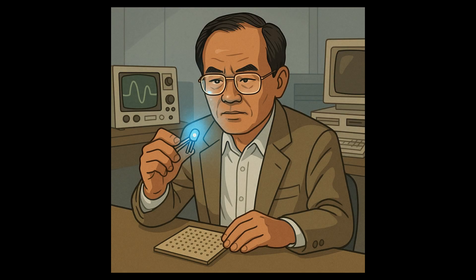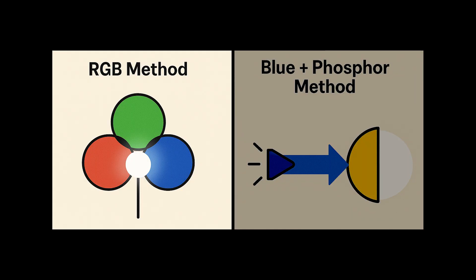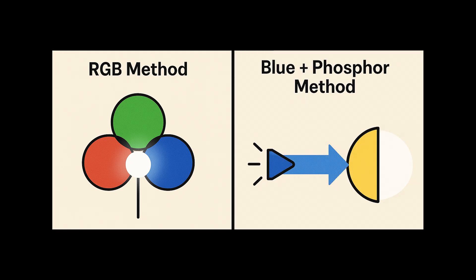Anyway, from the moment we finally got blue LEDs, white LEDs became possible. How? There are two main methods. The first is the RGB method, combining red, green, and blue LEDs together. Your eye blends them into white. The second is blue plus phosphor method. Shine a blue LED through a yellow phosphor coating, and the mix looks like white to us. Either way, you need blue.